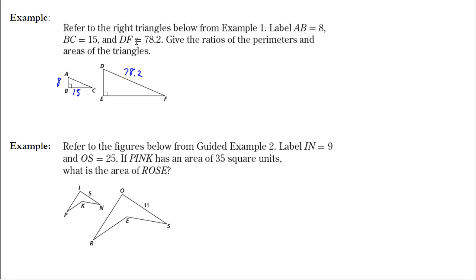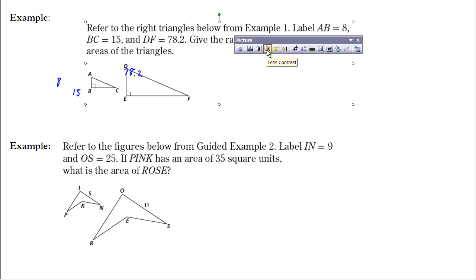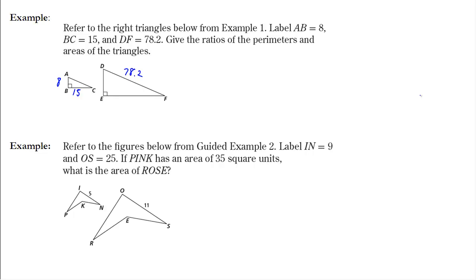Let's look at example one. Referring to the right triangle: AB is 8, BC is 15, and DF is 78.2, as shown on the two triangles below. We need to give the ratios of the perimeters and areas of the triangles. To find the ratio of perimeters, I need corresponding lengths. I have two measurements on triangle ABC and one on DEF, so I need to find a corresponding side. I'll use the Pythagorean theorem to find AC, which corresponds to DF.